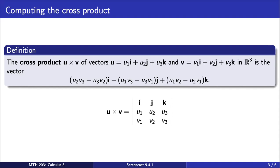To get this matrix, we arrange the standard unit vectors i, j, and k across the top row, the components of u across the second row, and the components of v across the third row.